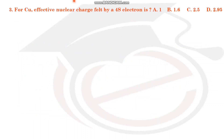Third question: for copper, what is the effective nuclear charge felt by the 4s electron? The options are 1, 1.6, 2.5, and 2.95. We consider the shielding effect. There are inner electrons that act as a shield or barrier to the outer electrons.